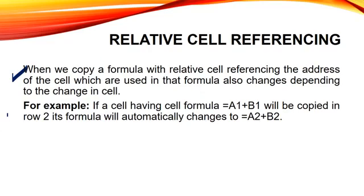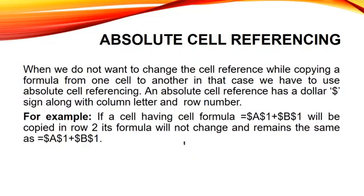For example, if in a cell we have written a formula as equals to A1 plus B1 and now we are copying that formula to row 2, the formula will automatically change. In absolute cell referencing, generally when we do not want to change the references while copying them, we can use absolute cell reference. An absolute cell reference has a dollar sign along with the column letter and the row number, for example equals to $A$1 plus $B$1. If we copy this in any other row, the reference will not change.